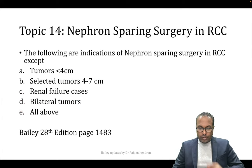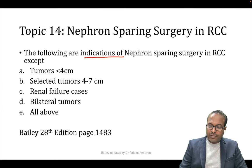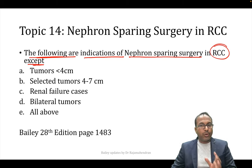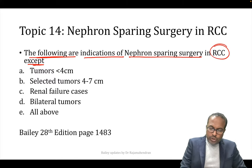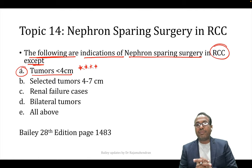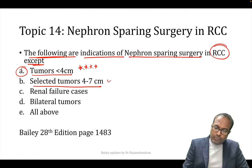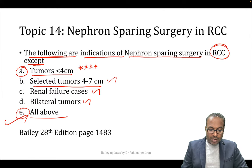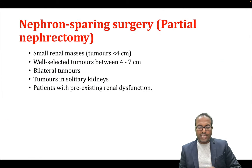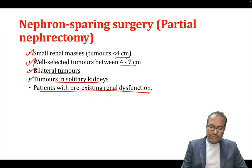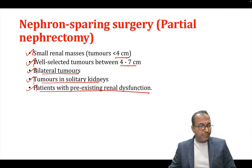New update from renal cell cancer: indications for nephron-sparing surgery (partial nephrectomy). Old criterion: only for tumors less than 4 cm. New update: selected tumors of 4–7 cm can also undergo partial nephrectomy. Also indicated for bilateral tumors, solitary kidney, and pre-existing renal failure. Answer: all the above.